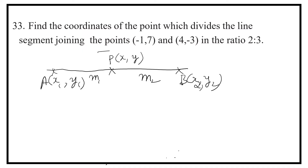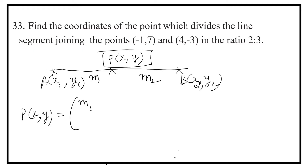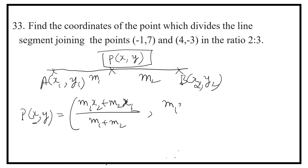Then the coordinates of P(x, y) are given by the section formula: the x-coordinate is m1·x2 plus m2·x1 upon m1 plus m2, and the y-coordinate is m1·y2 plus m2·y1 upon m1 plus m2.